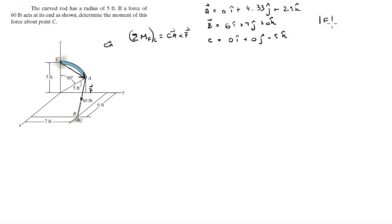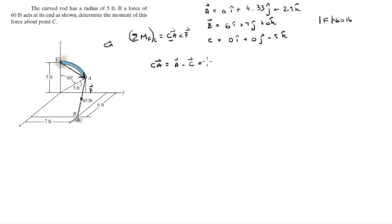The magnitude of F is 60 pounds. The first thing we need to do is find vector CA for our cross product. Vector CA equals vector A minus vector C, which comes out to be 0i plus 4.33j minus 2.5k.